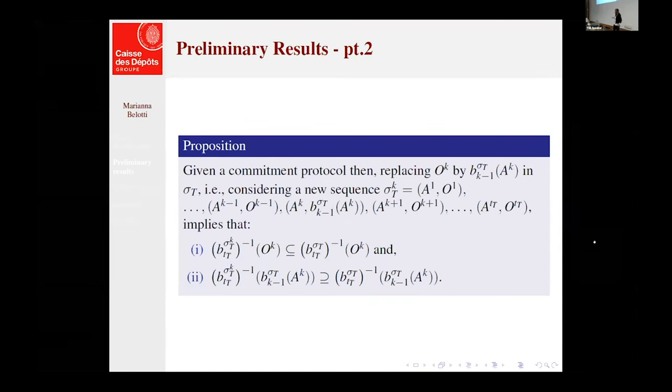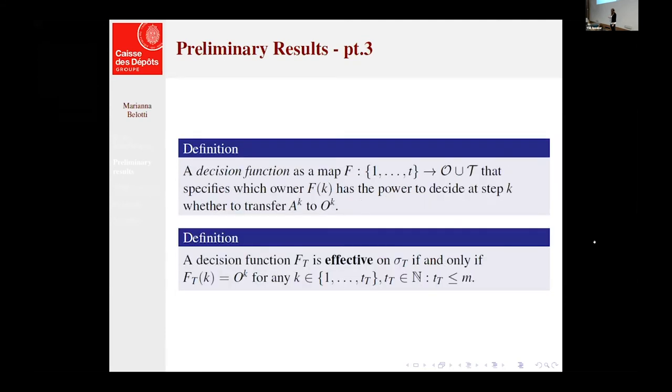Second easy trivial result is the fact that if along the sequence, there is a transfer that doesn't occur in a correct manner, so doesn't realize, we have a situation where there is someone that gains and someone that loses. So the first point says that there is someone that is happier because he has an asset more and someone that, the second point says, there is someone that is sad because he loses an asset. So we have a situation this way and this proposition will be useful for the final result.